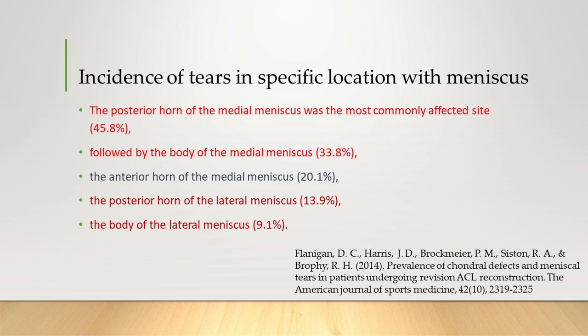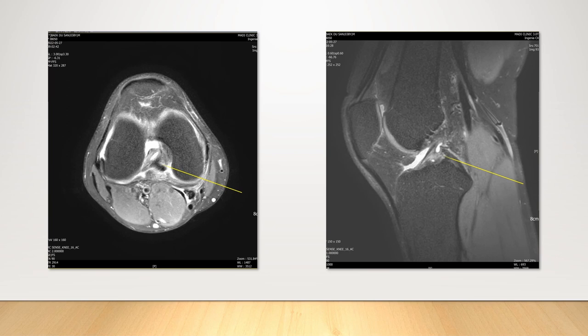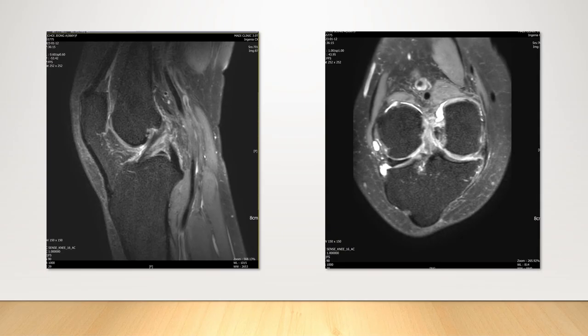It is a case of mucoid degeneration of the anterior cruciate ligament, and another case of severe mucoid degeneration with an anterior cruciate ligament tear. During the physical examination of the knee, if the patient feels severe pain and limited range of motion during the passive flexion test, you should consider either posterior root tear or anterior cruciate ligament pathology.